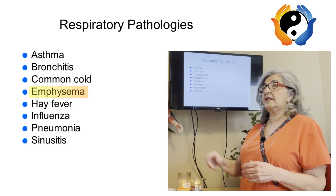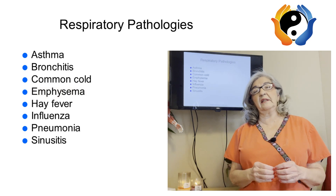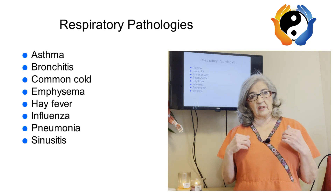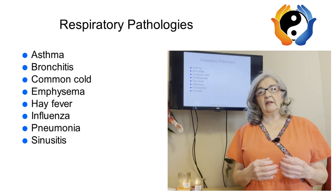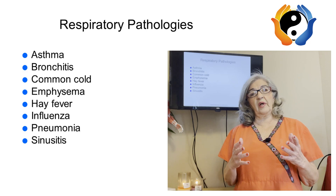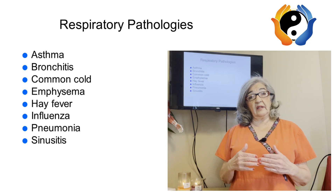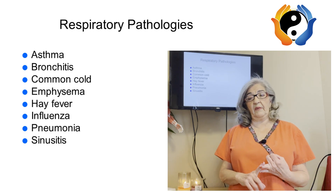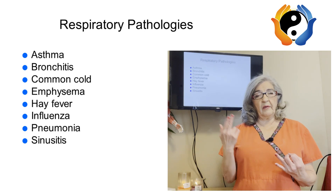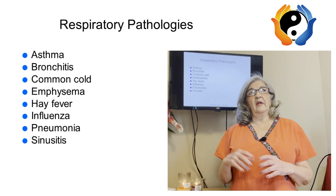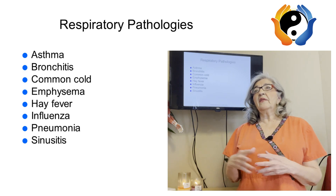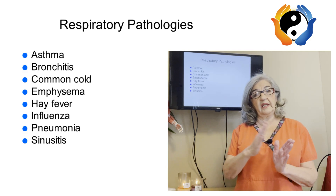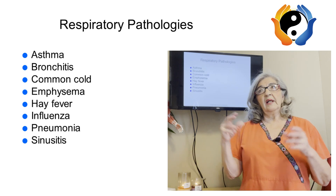The next one is emphysema. Emphysema is a permanent enlargement of the lower airways — the alveoli in the lungs are destroyed, replaced by scar tissue, and the alveolar walls are damaged. Clients have real difficulty breathing. This pathology is typically seen in smokers and people who work in toxic environments near factories. They are usually on medication and inhalers.